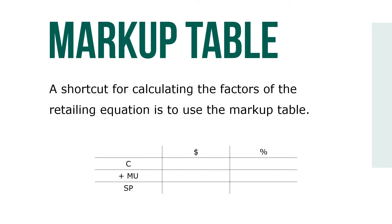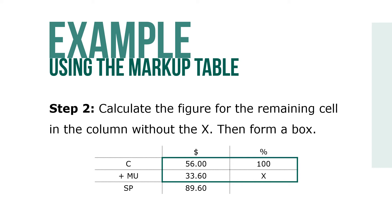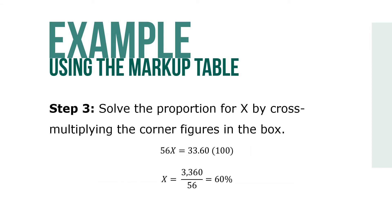A shortcut for calculating the factors of the retailing equation is to use the markup table. The cells represent cost, markup, and selling price in both dollars and percents. Fill in the given information using 100% for the base and x for the unknown. Calculate the figure for the remaining cell in the column without the x, and then form a box. Now we can solve the proportion for x by cross multiplying the corner figures of the box.